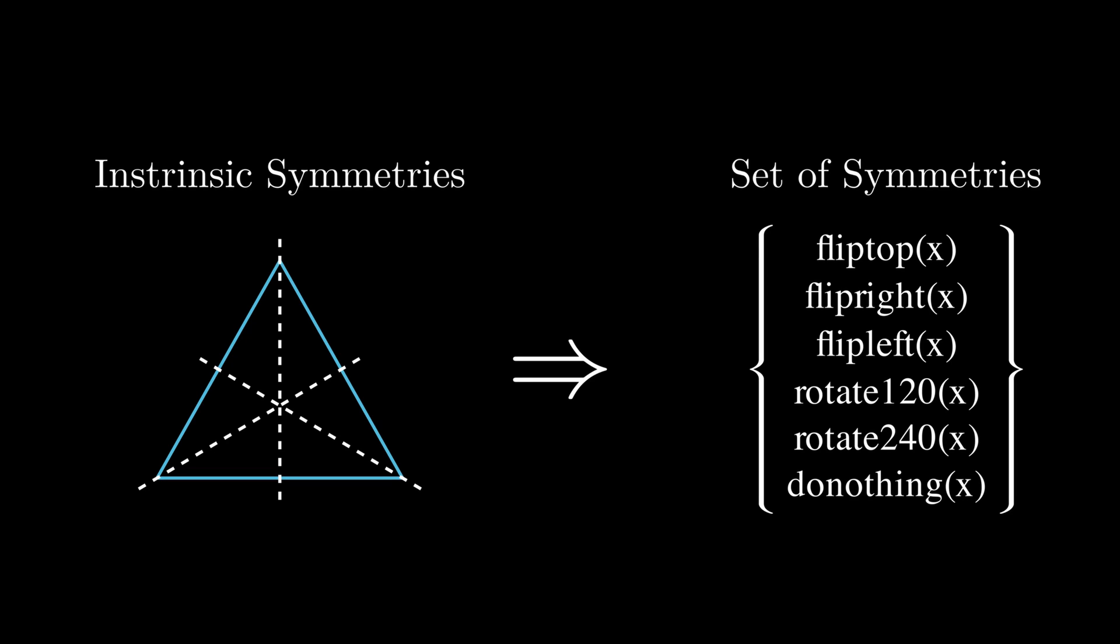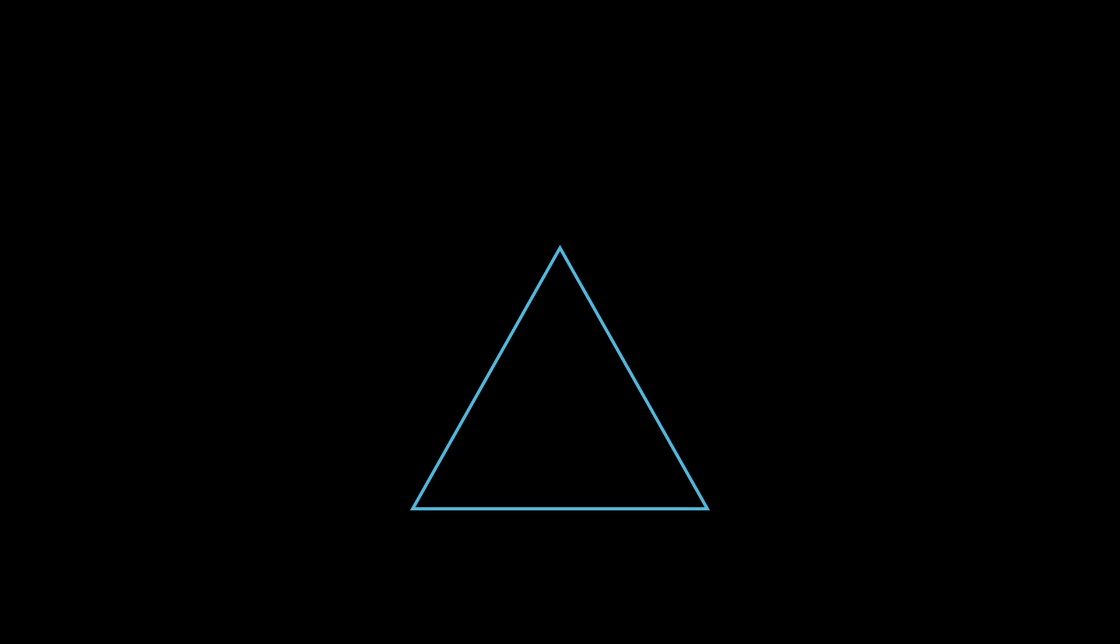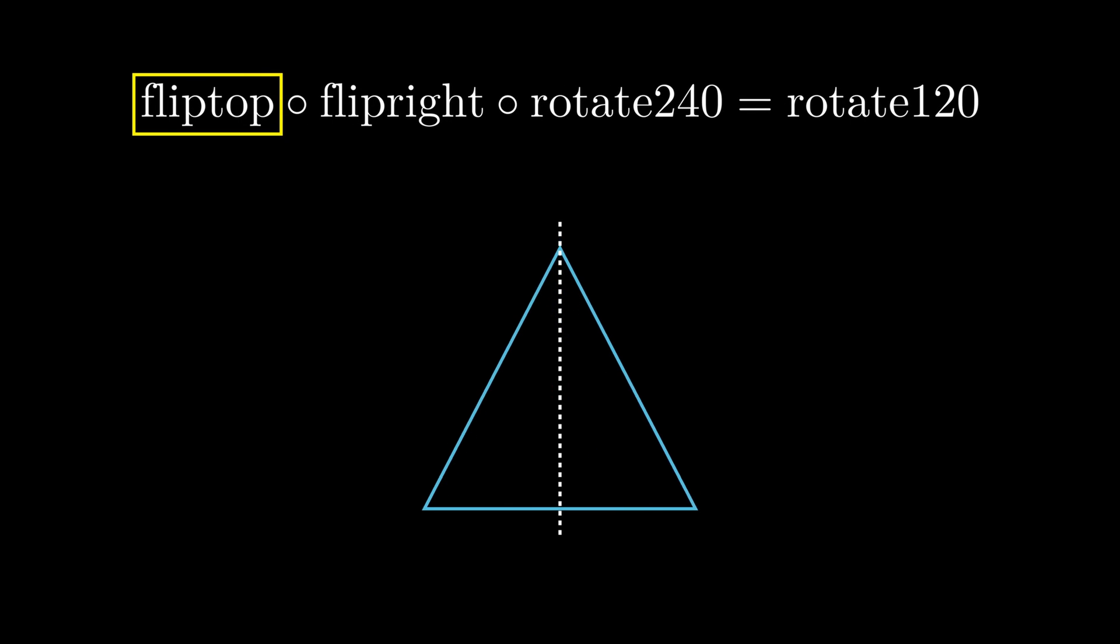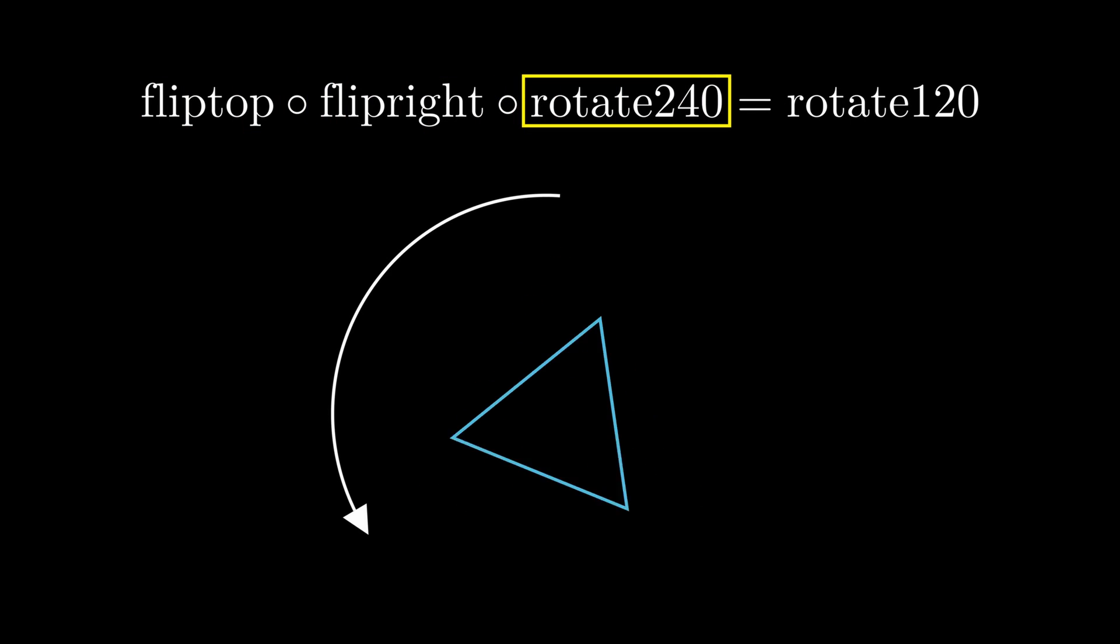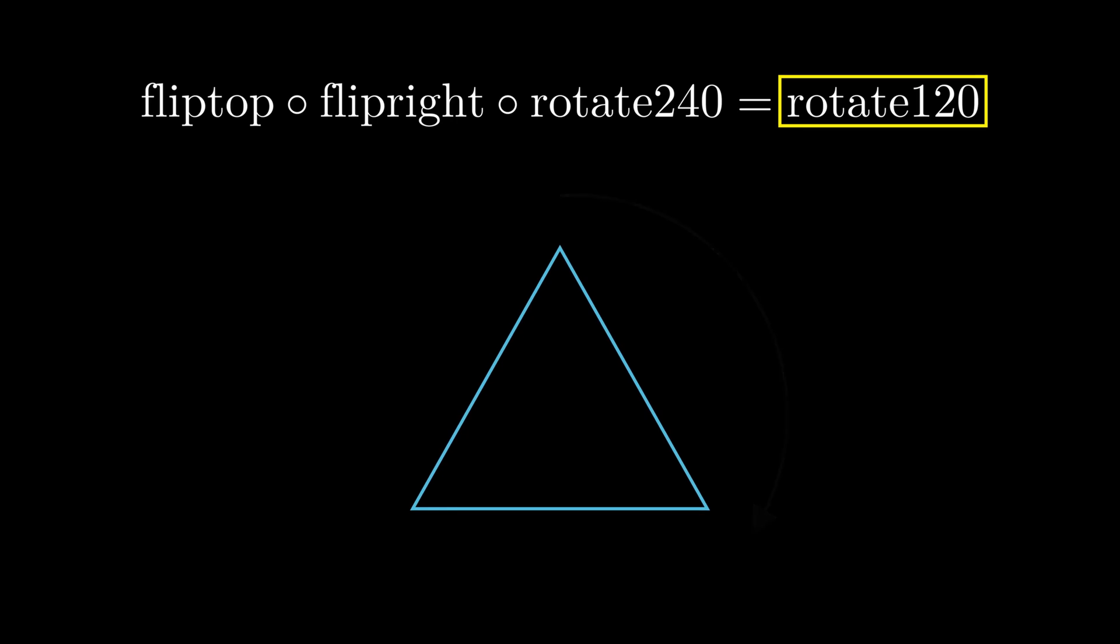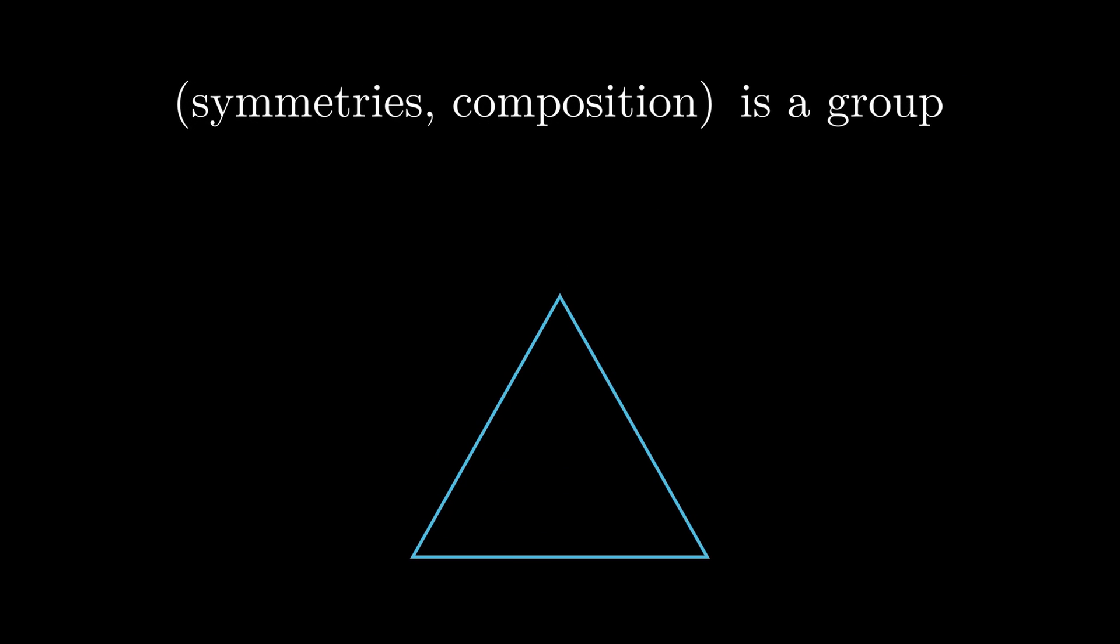So now that we have a set of six symmetries, how can these fit into the formal definition of a group? The answer is composition. Composition here means doing one action followed by another and considering what happens in total. If we put the six symmetries in a set and equip the set with composition, it becomes a group.